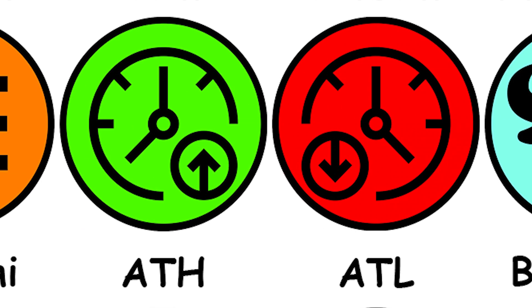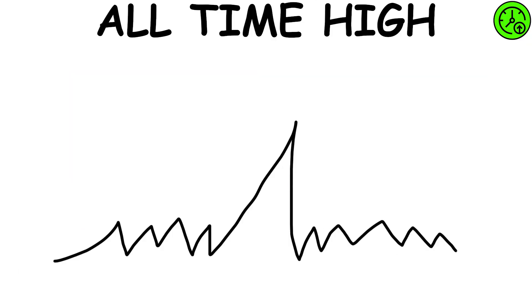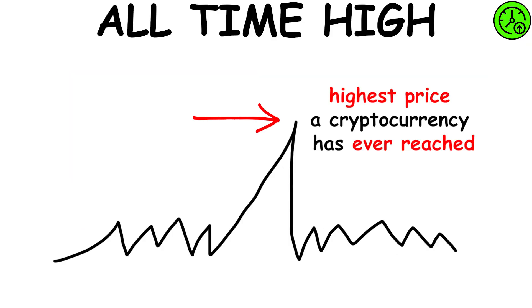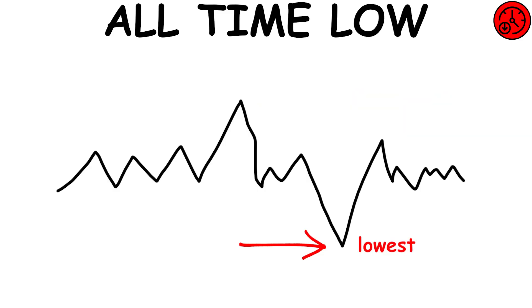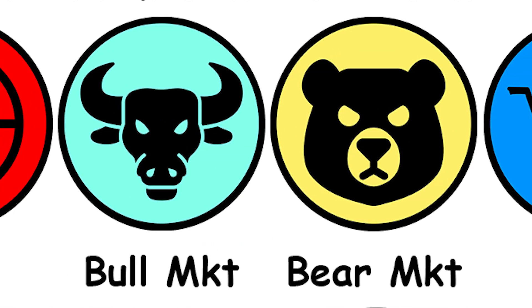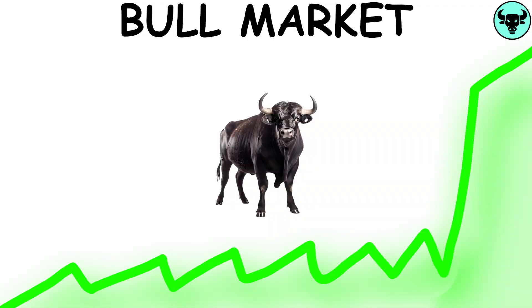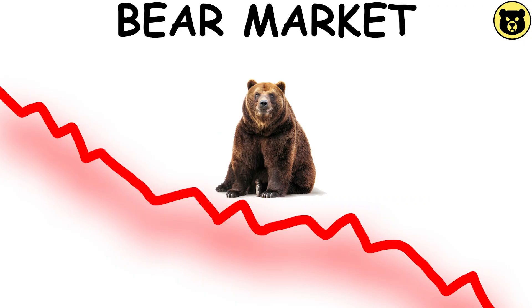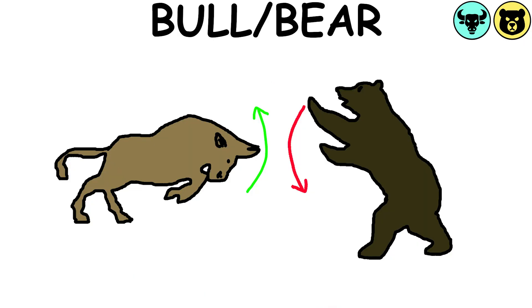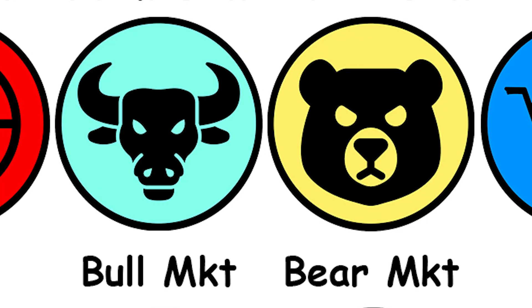All time high, all time low: all time high refers to the highest price a cryptocurrency has ever reached, while all time low refers to the lowest. Bull market, bear market: a bull market means that prices are rising, a bear market means that prices are falling. They are named after each animal's attack style.